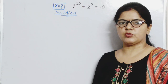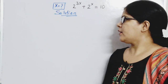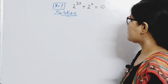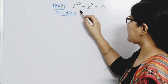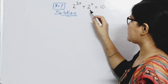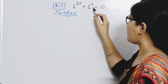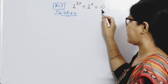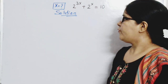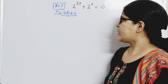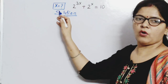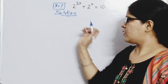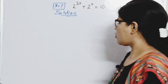Hello everyone, welcome to the channel. Here we have a nice exponential problem. The problem is 2 raised to power 3x plus 2 raised to power x equal to 10. We have to solve this exponential problem for the value of x. Let's start the solution.